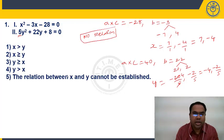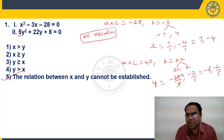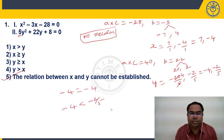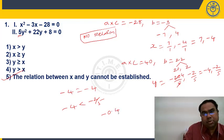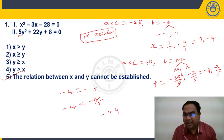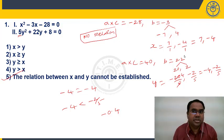Looking at the options: relationship between X and Y cannot be determined. Since one root comparison gives X greater and another gives X equal/less, we cannot establish a definite relationship. Choose option 5.